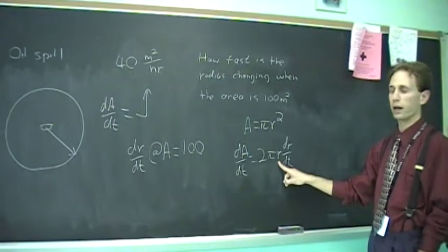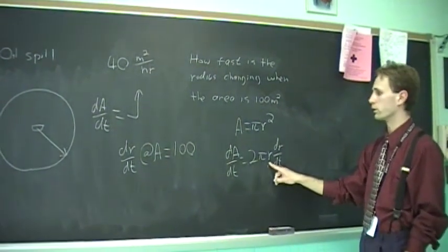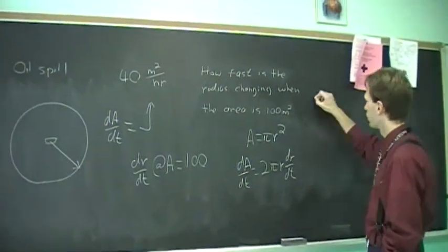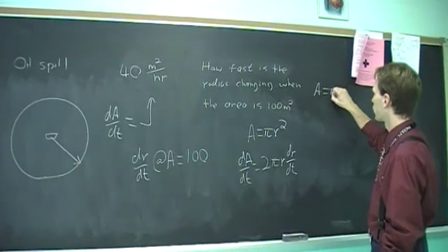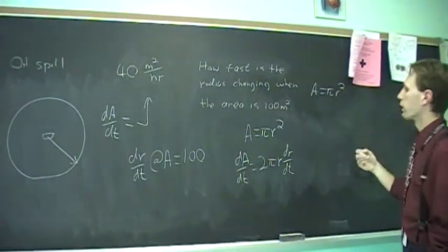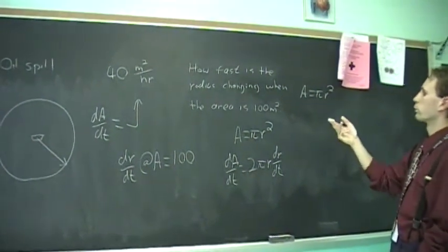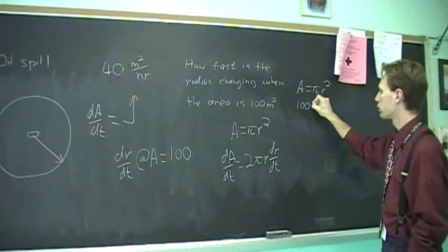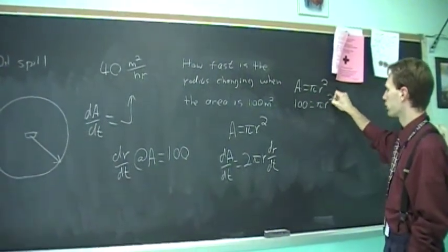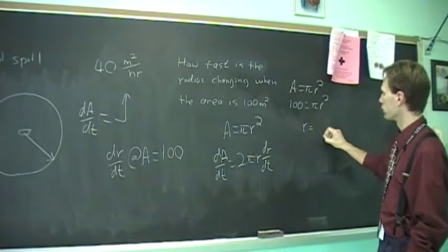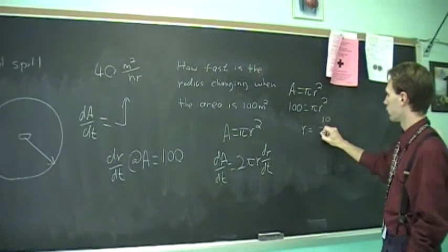Because r is what we need to know. So then you go back to the formula, πr². Figure out what is r if A is 100. 100 equals πr², and you wind up getting r equals 10 over √π.